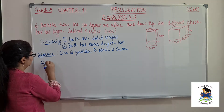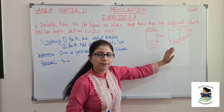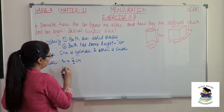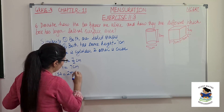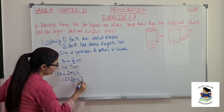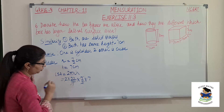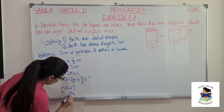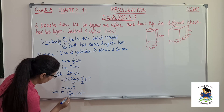For the cylinder, the diameter is 7 centimeter, so the radius R is 7 by 2 centimeter, and height is 7 centimeter. Lateral surface area of a cylinder is 2πRH. Using π as 22/7: 2 × (22/7) × (7/2) × 7. The 7s and 2s cancel, giving 22 × 7, which is 154 centimeter square.